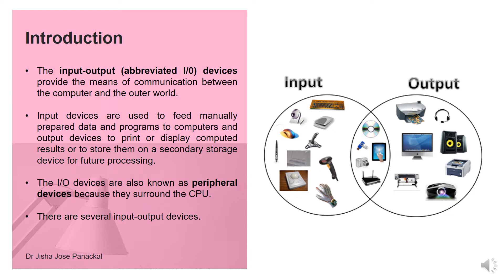As we all know, input and output units are part of the components of a computer. Input output devices, commonly abbreviated as IO devices, are used to provide the means of communication between the computer and the outer world. Input devices are used to feed manually prepared data and programs to computers, and output devices to print or display computed results or to store them on a secondary storage device for further processing.